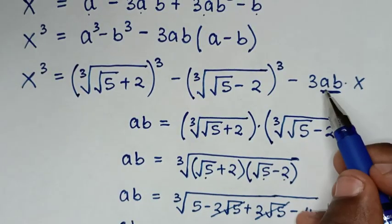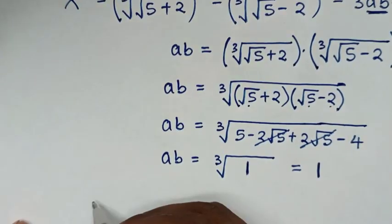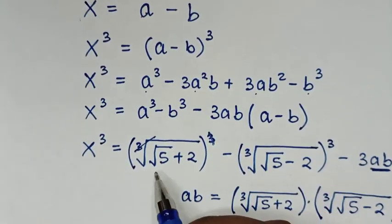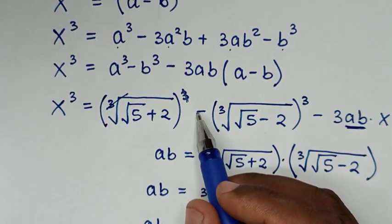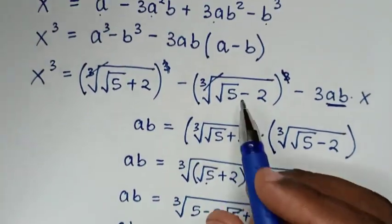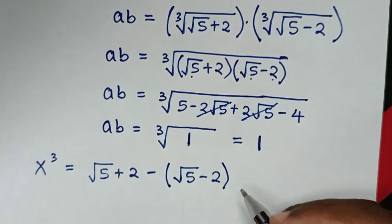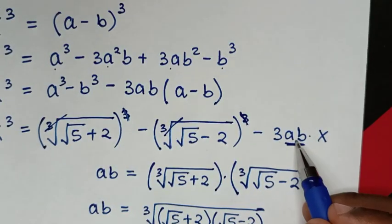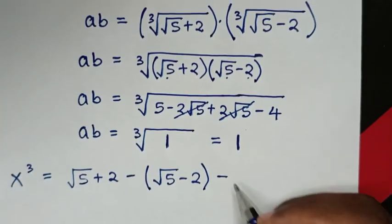Substituting ab equals 1, x cubed equals: the cube root of (square root of 5 plus 2) cubed, which simplifies to (square root of 5 plus 2), minus the cube root of (square root of 5 minus 2) cubed, which simplifies to (square root of 5 minus 2), then minus 3 times 1 times x, which is minus 3x.